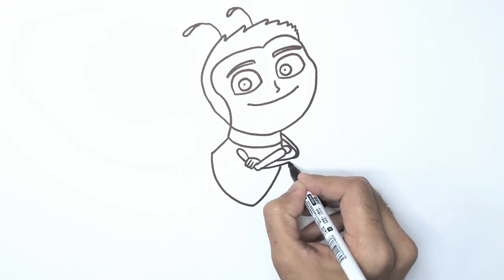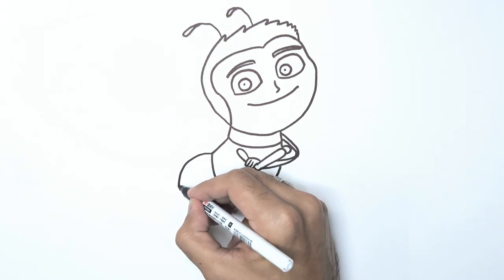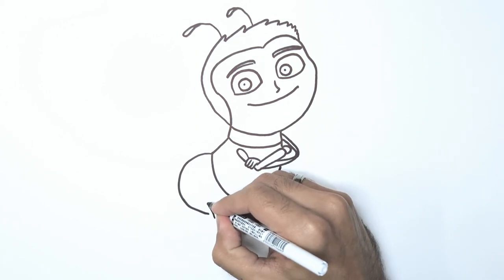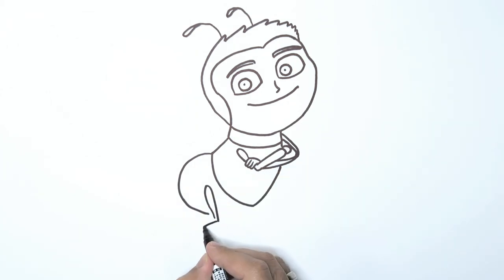Step 9. Moving downwards, draw a curvy line for his pelvis. Then, create his right leg and close the shape with a curve.